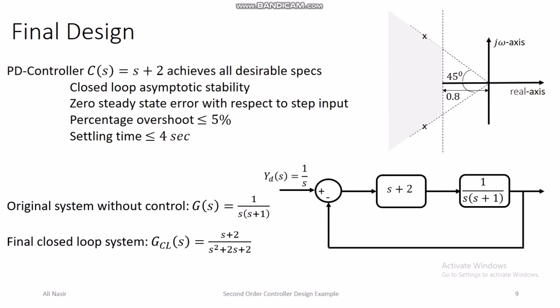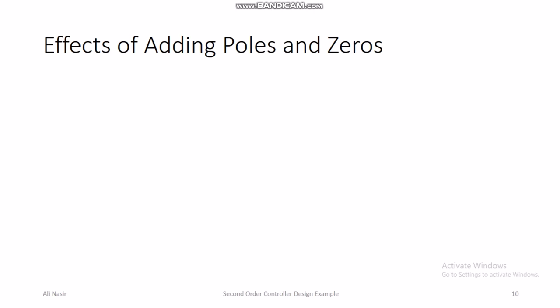With the addition of feedback control, the overall system has gained a zero at s = −2, indicated by the numerator (s + 2). The poles of the closed loop system are the roots of s² + 2s + 2. No new poles were added — there were two poles originally and the final closed loop system also has two poles. Only the pole locations changed. One zero was added via the PD controller.